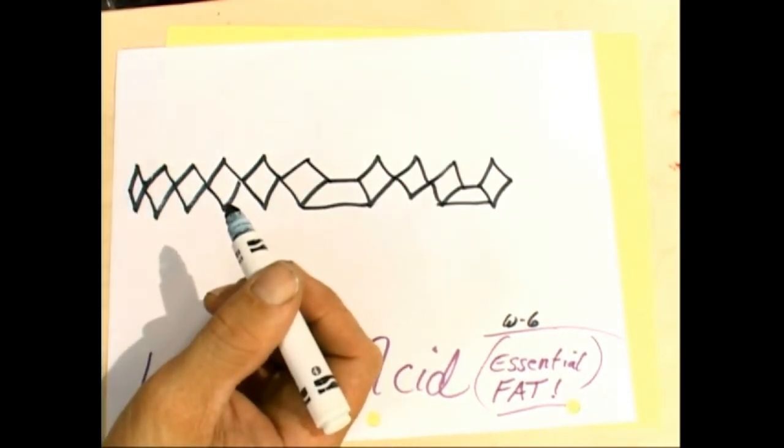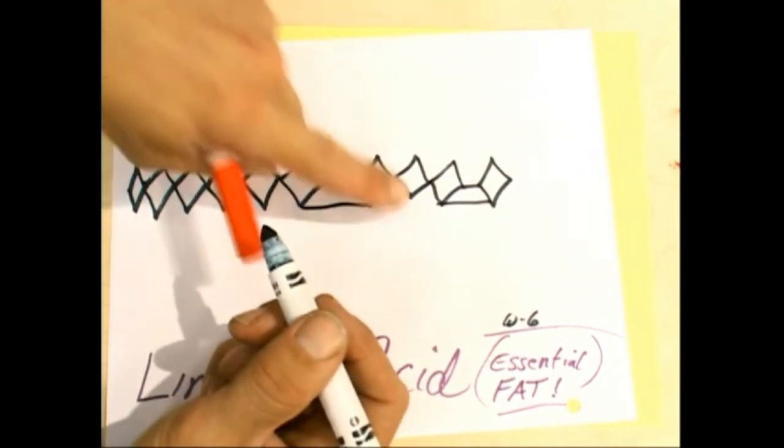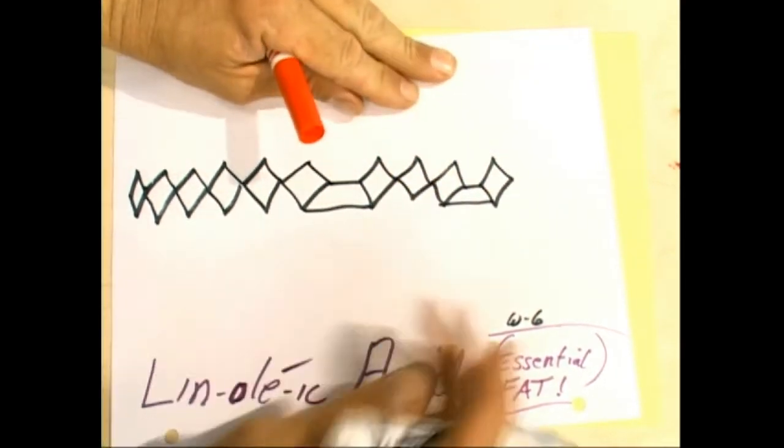This double bond. One, two, three, four, five, six, seven, eight from this double bond. Whoa, we didn't leave enough room, did we?